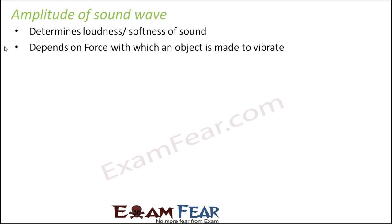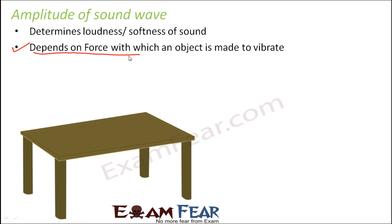Amplitude primarily depends on the force with which the object is made to vibrate. When I tap the table, something is vibrating within the table and that vibration produces sound. In the first scenario, if you tap the table very gently, the sound produced is also very small — force applied is less, amplitude is less, and therefore loudness is also less.